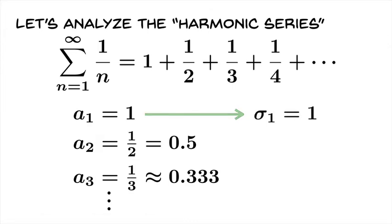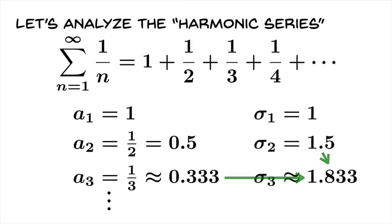The first partial sum is just the first term. The second partial sum will be the previous partial sum plus the second term. And then the third partial sum will be the second partial sum plus the third term and so on.